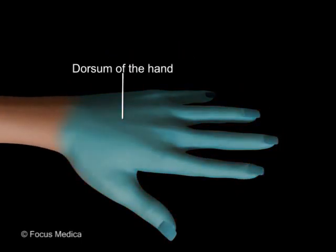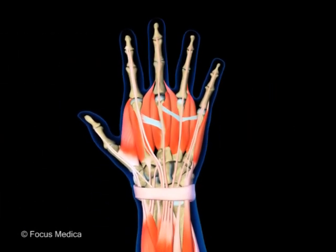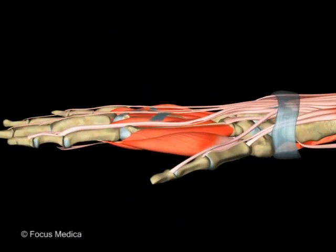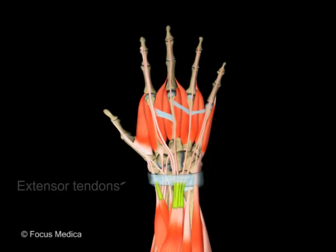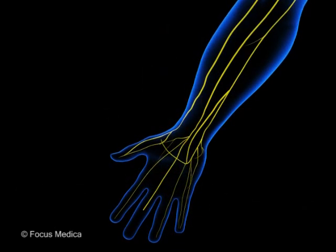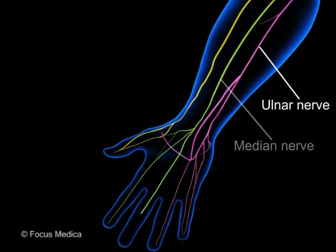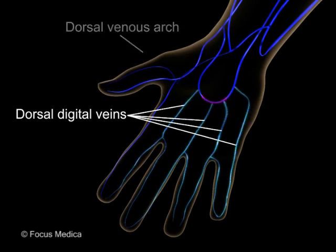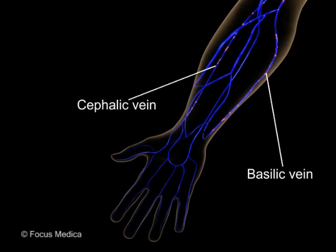The dorsum of the hand is the back part of the hand in anatomical position. This area is occupied exclusively by the extensor tendons. The proximal part of the dorsum has a fascial band called the extensor retinaculum, and the long extensor tendons to the fingers pass below this fascia into the dorsum. The main cutaneous nerves of this region include the dorsal branches of ulnar, median, and radial nerves. Venous drainage is by the dorsal digital veins and the dorsal venous arch, with the basilic and cephalic veins carrying blood into the forearm.